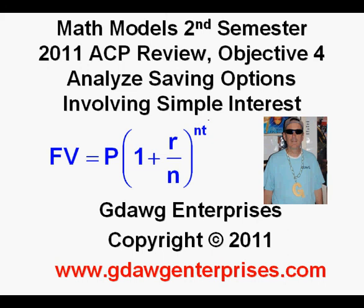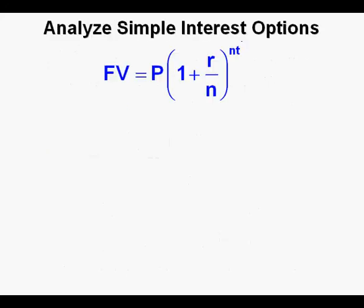Math Model 2nd Semester 2011 ACP Review Objective 4: Analyze Savings Options Involving Simple Interest. This lesson employs the formula to calculate future value of money shown here.